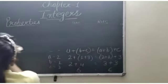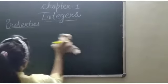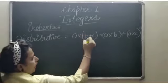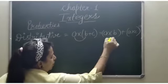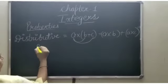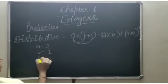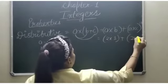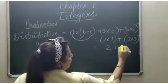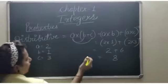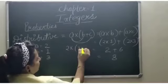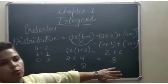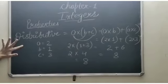Next is distributive property. Distributive property states that A multiplied by (B plus C) is equal to A multiplied by B, plus A multiplied by C. For example, A is 2, B is 1, C is 3. So: 2 times 1 plus 2 times 3 equals 2 plus 6 equals 8. And on the left hand side: 2 multiplied by (1 plus 3) equals 2 times 4 equals 8. So LHS is equal to RHS. This is the distributive property of multiplication.